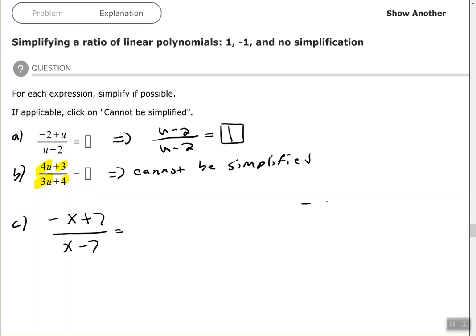What happens if I factor out a negative 1? Let's see here. So if I divide these by negative 1, then that makes x positive and then 7 negative or minus.